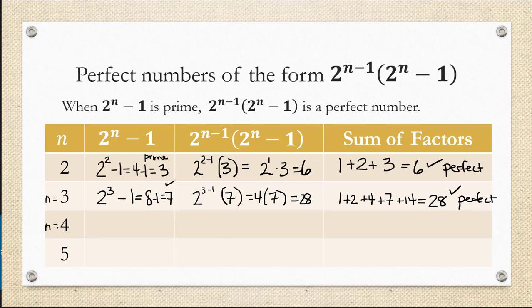Let's try when n is 4. So we get 2 to the 4th minus 1 is going to be 16 minus 1, which is 15. This is not a prime number, so this rule doesn't apply.